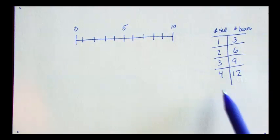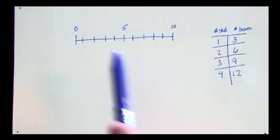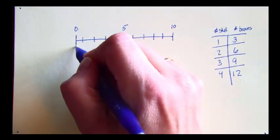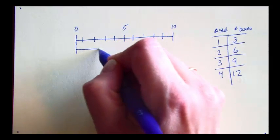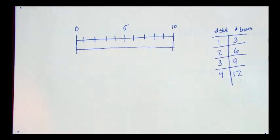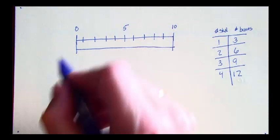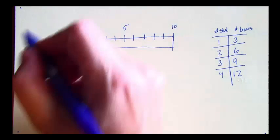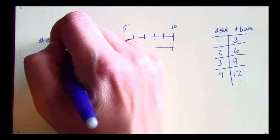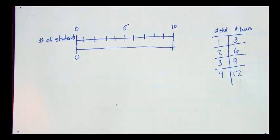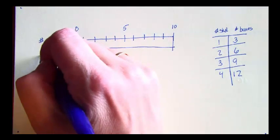To show this information on a double number line, I could start with my number line like this and add another line below it. It would also start at 0. The top line is my number of students. My bottom line is my number of boxes.